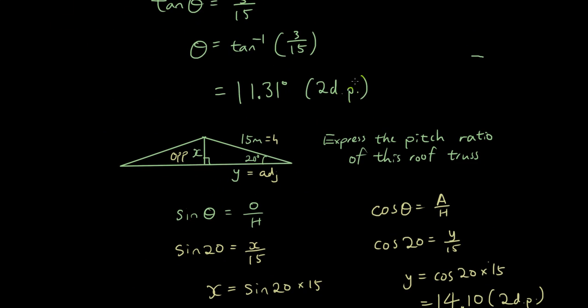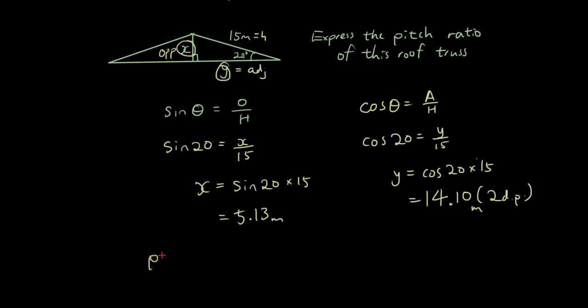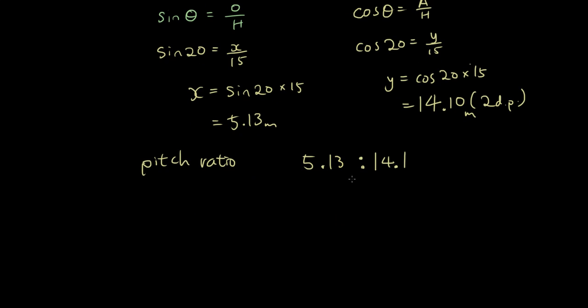So the pitch ratio is written as the length of the king post, which is 5.13, to the length of the tie beam, which is 14.1.